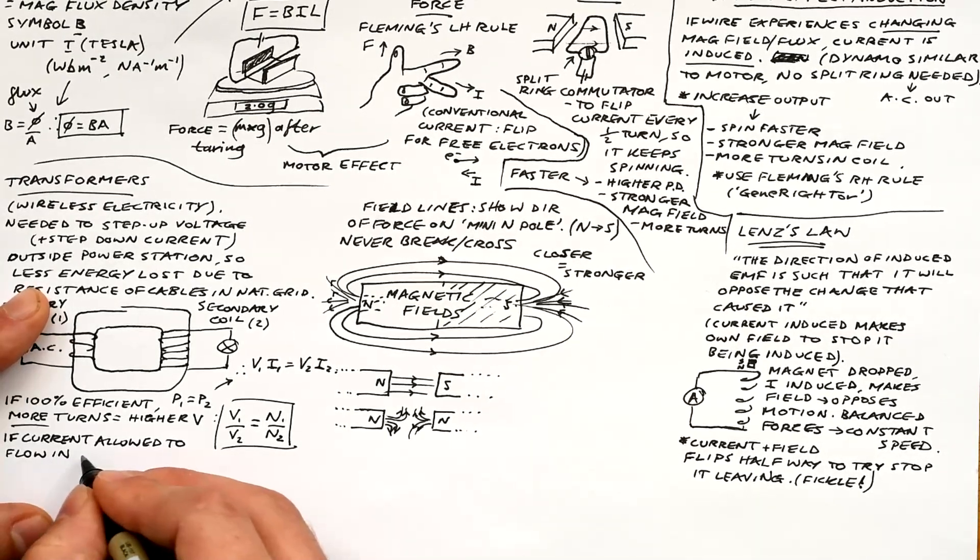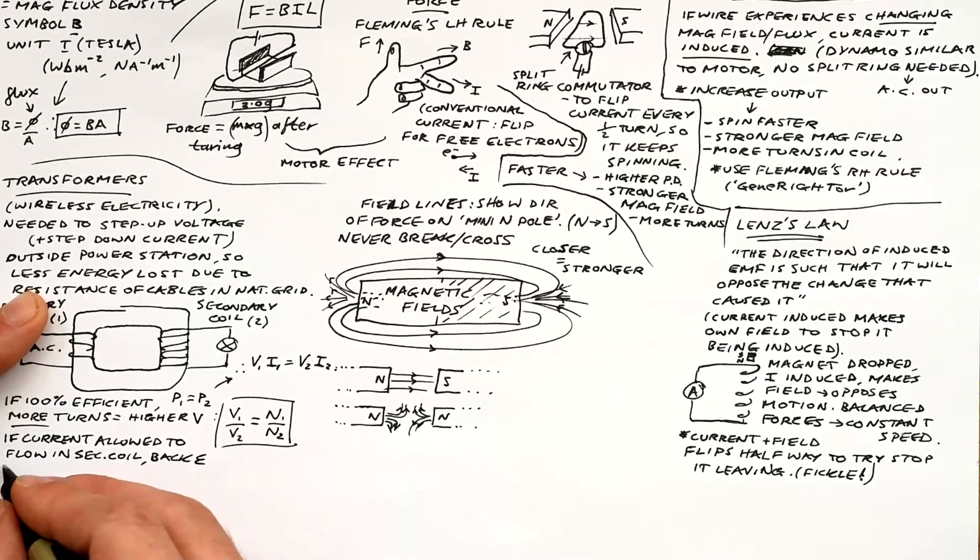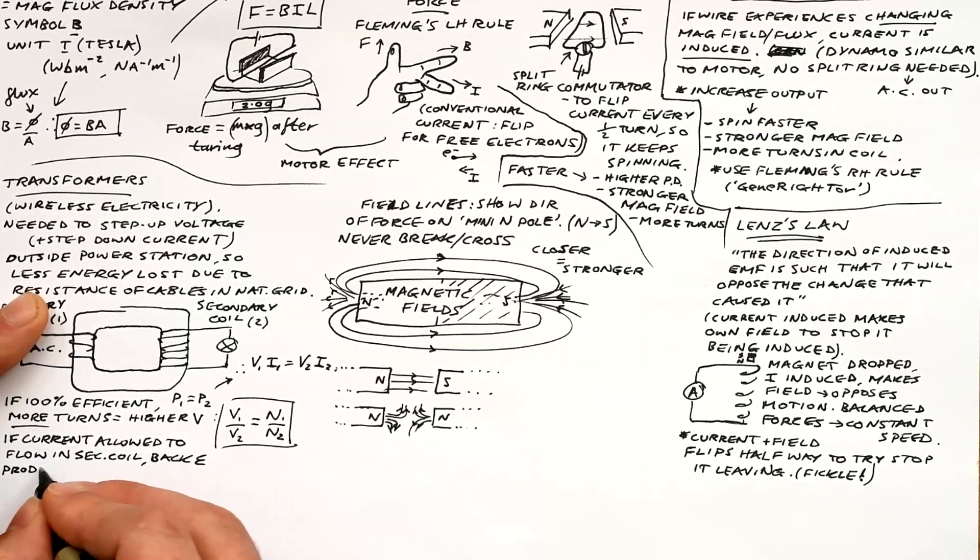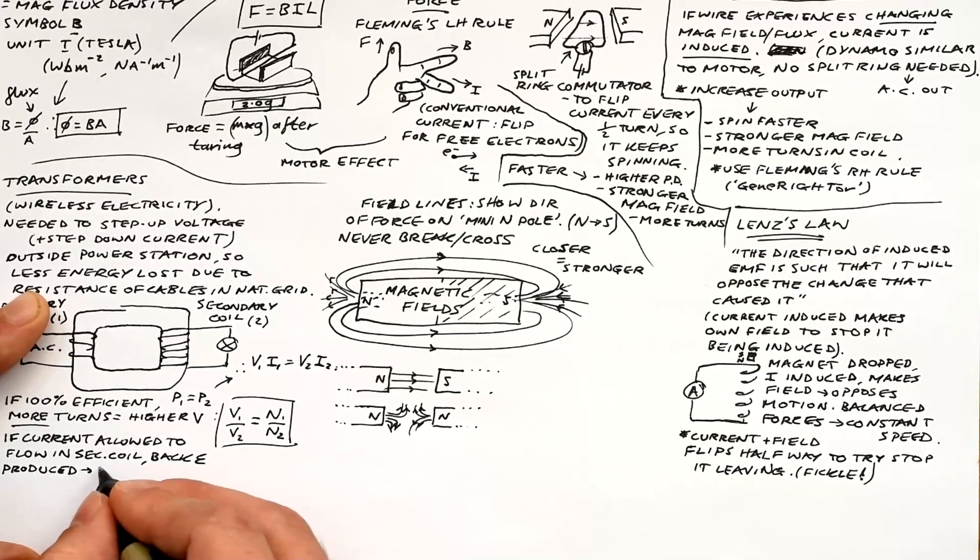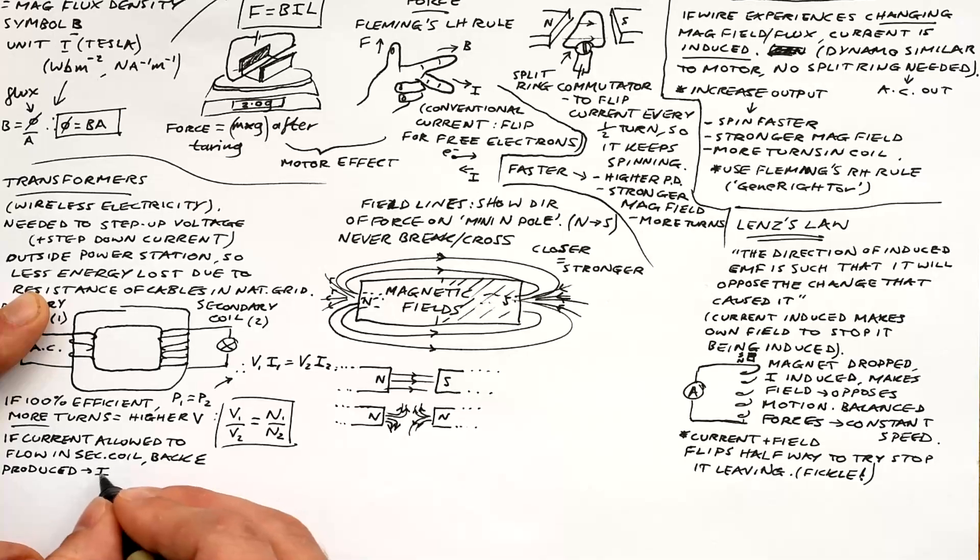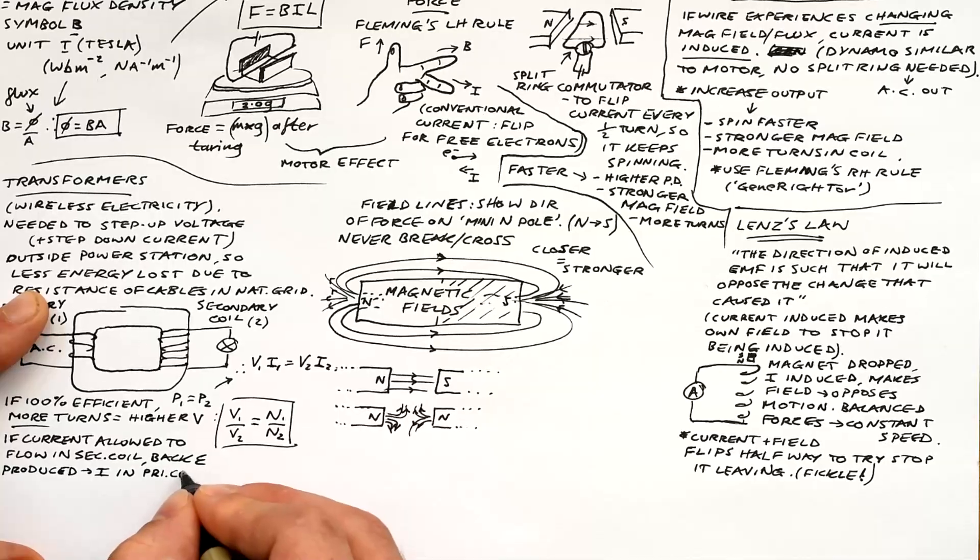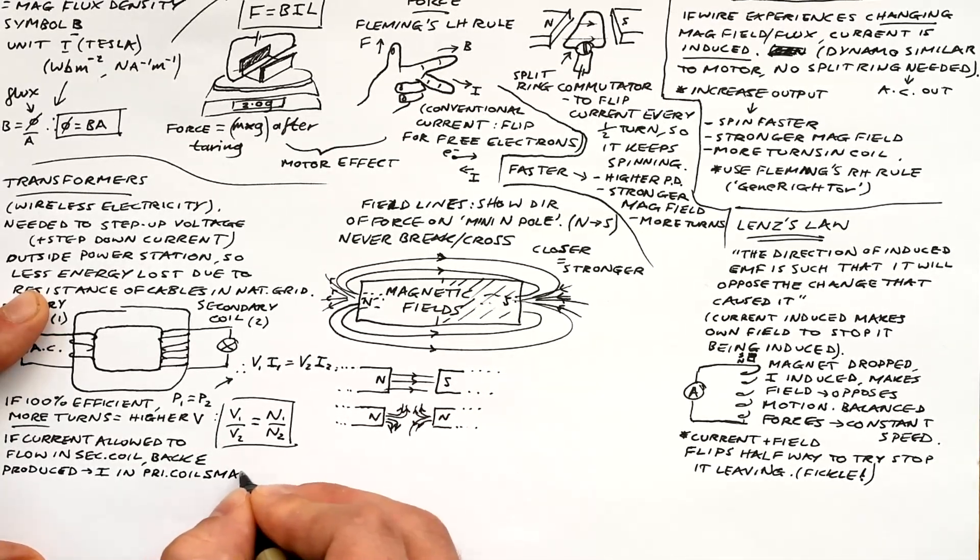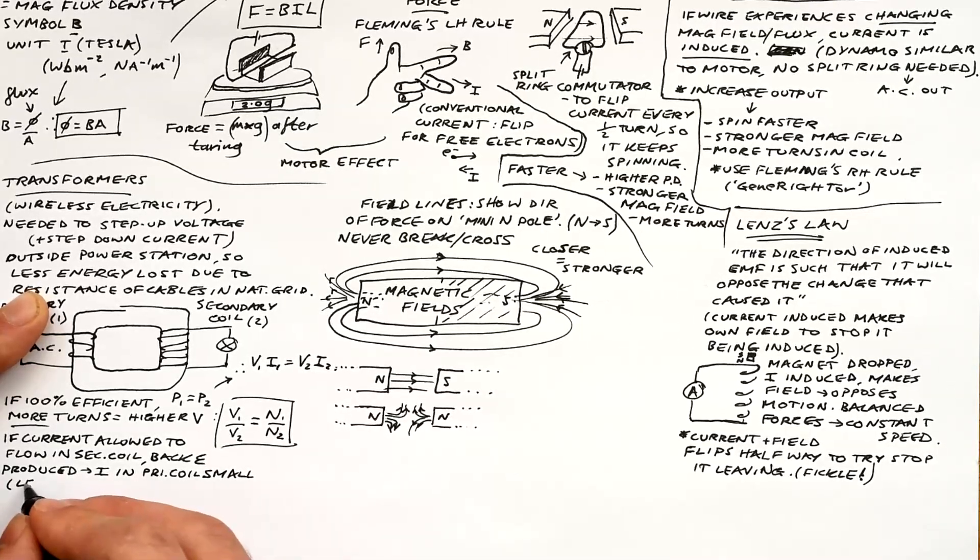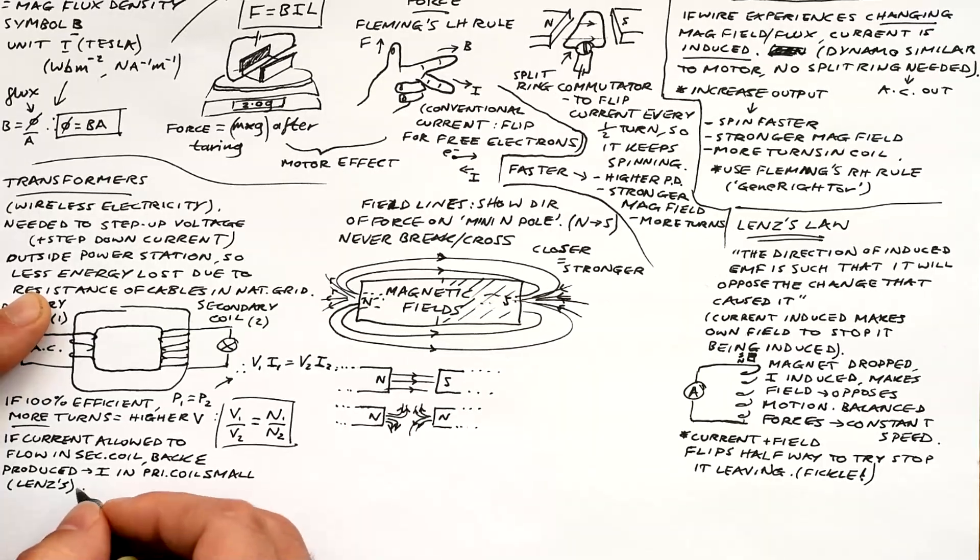And Lenz's law applies to transformers because if a current is allowed to be induced in a secondary coil, then the current flowing will actually make its own magnetic field as well that will try and induce a back EMF in the primary coil. So the current that is induced in the secondary coil doesn't want to be there. So if there's no secondary coil or the circuit is disconnected, then that means the primary coil, well, the current can just flow freely. But if we do have a circuit attached to the secondary coil, then that current induced will provide a back EMF that will reduce the current in the primary coil, which actually is a good thing.